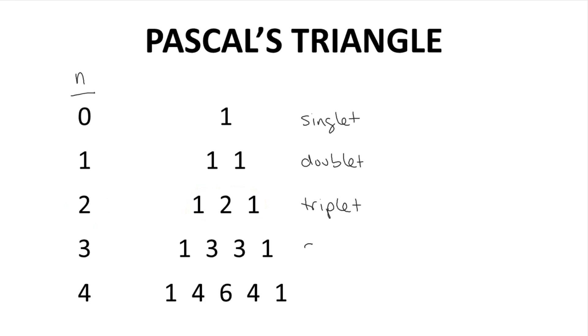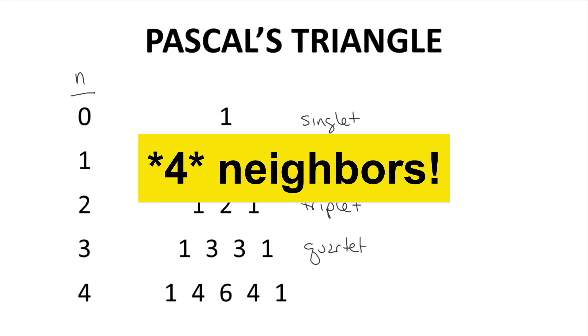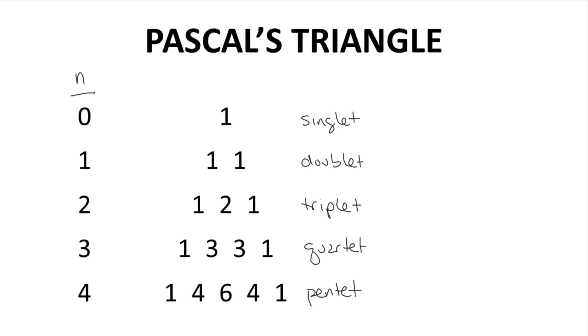Three neighbors, a quartet. Five neighbors, a pentet. The number of peaks in the signal is one larger than the number of neighbors. This relationship is sometimes called the N plus one rule.